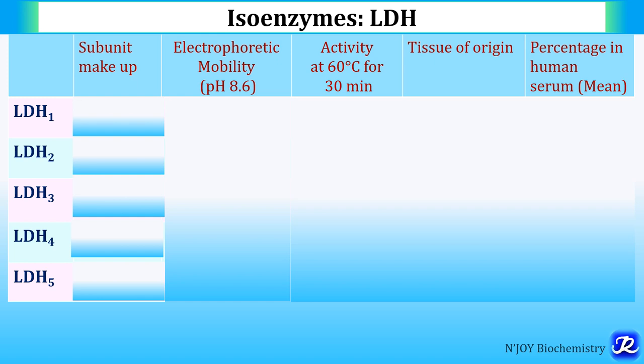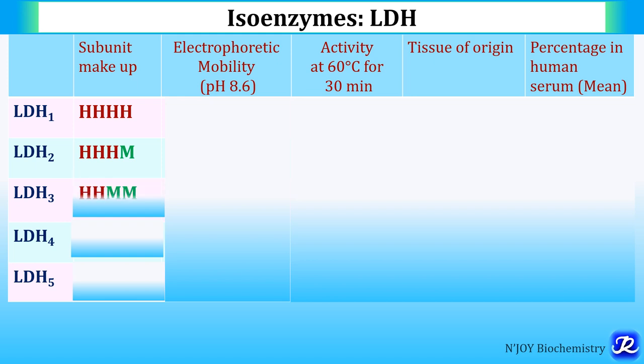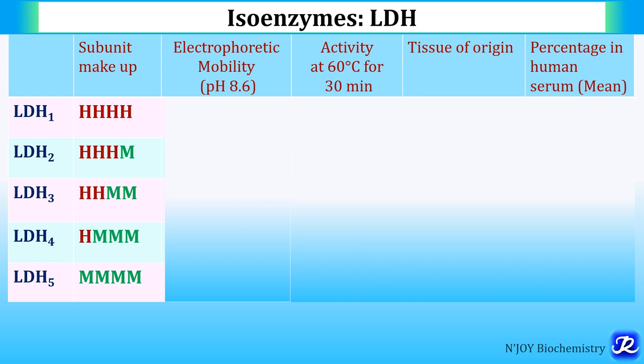Now let's see the properties of LDH isoenzymes. Subunit makeup: LDH1 is H4, LDH2 is H3M1, LDH3 is H2M2, LDH4 is H1M3, and LDH5 is M4. Regarding electrophoretic mobility at pH 8.6, LDH1 (H4) is the fastest moving toward the anode, and LDH5 is the slowest.